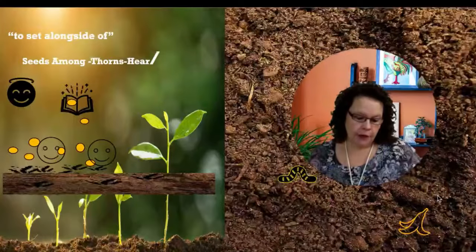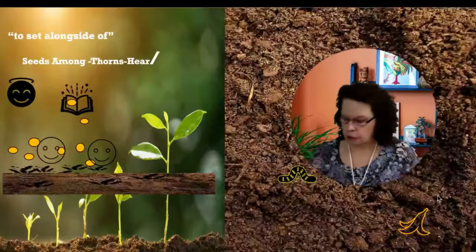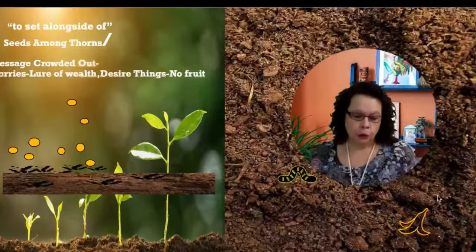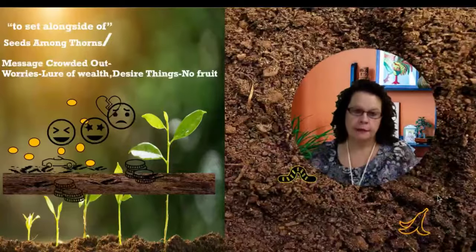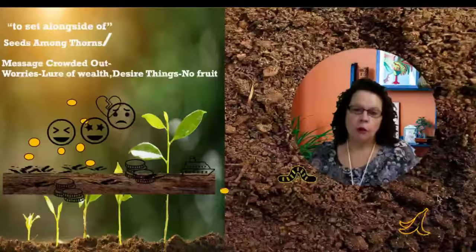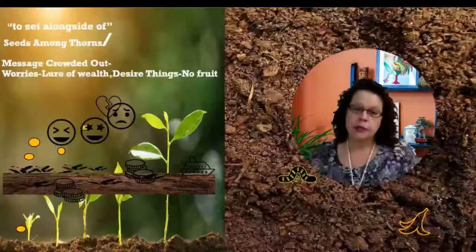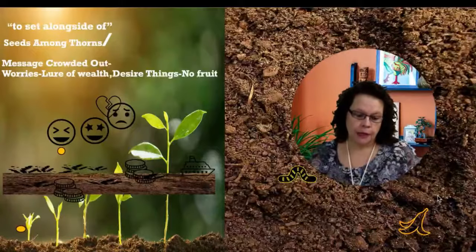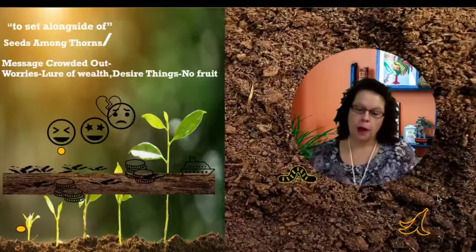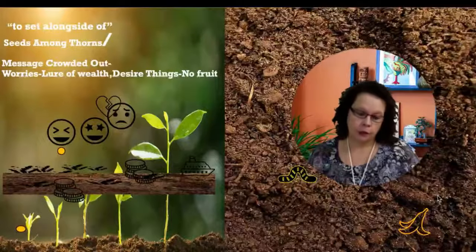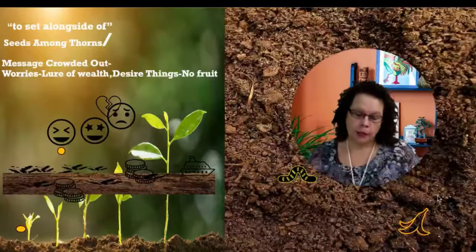The seed that fell among the thorns represents those who hear God's word, but all too quickly this message is crowded out by the worries of this life, by the lure of wealth, and the desires for other things. So no fruit is produced. They didn't know there were thorns there until the thorns grew up with the plants and choked them so that they could not produce. The plant was grown, but no fruit.